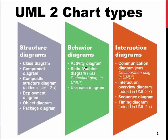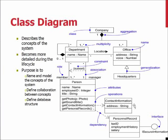UML has three types of different diagrams. The structure diagrams indicate how the system should be built, what sort of components it should have, and how it should be deployed when finished. The behavioral diagrams indicate how the system should behave in different use cases, and the interaction diagrams tell what sort of messages and activities should happen when the system is functioning.